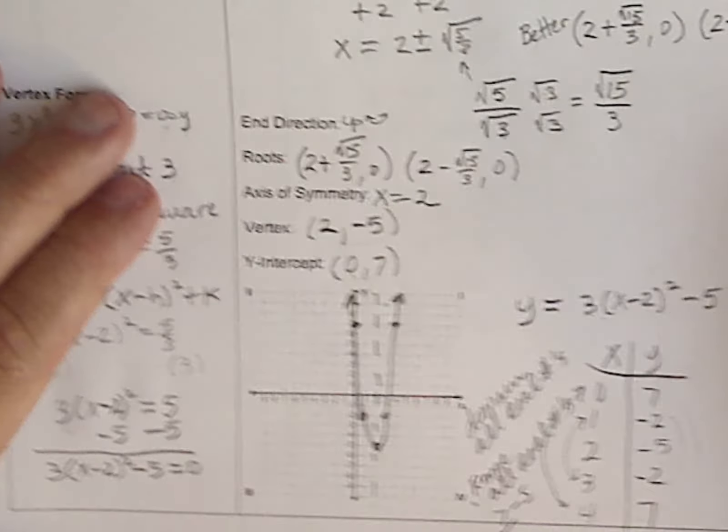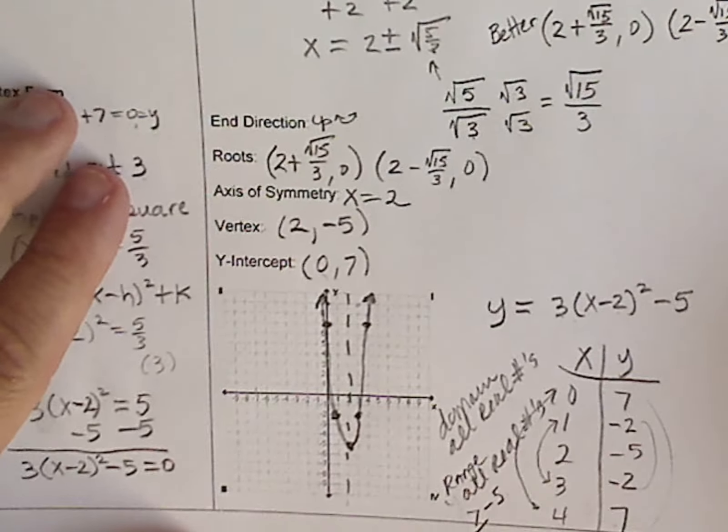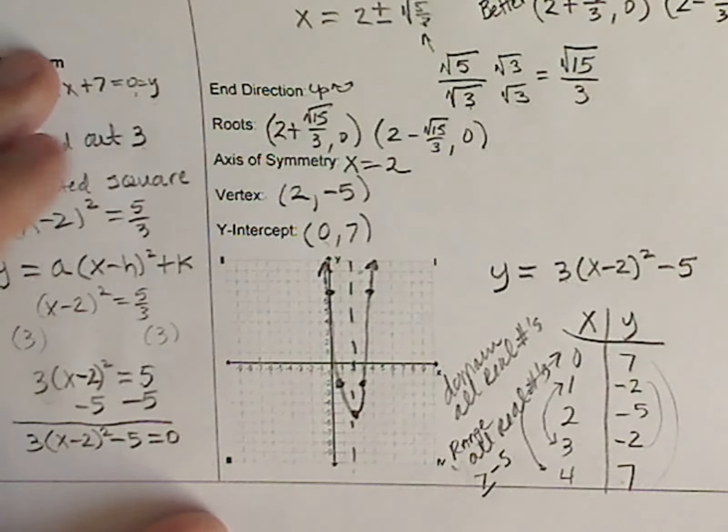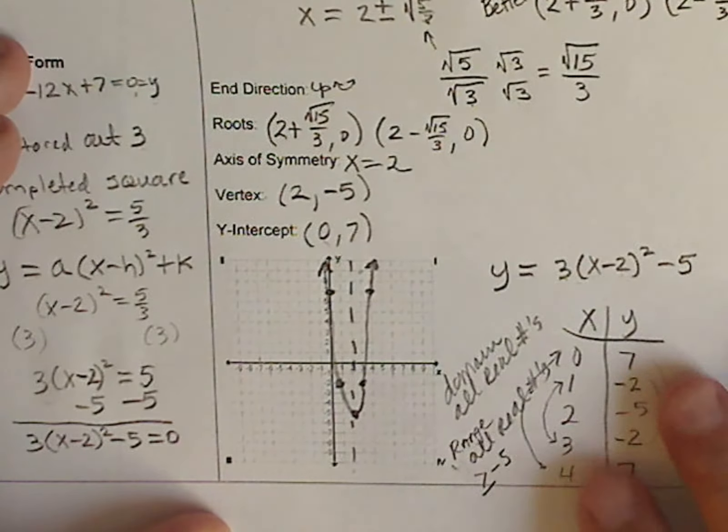But here you have it. I've got all the information required. And I've converted it to vertex form. And I've even graphed it. There you go. That's all.